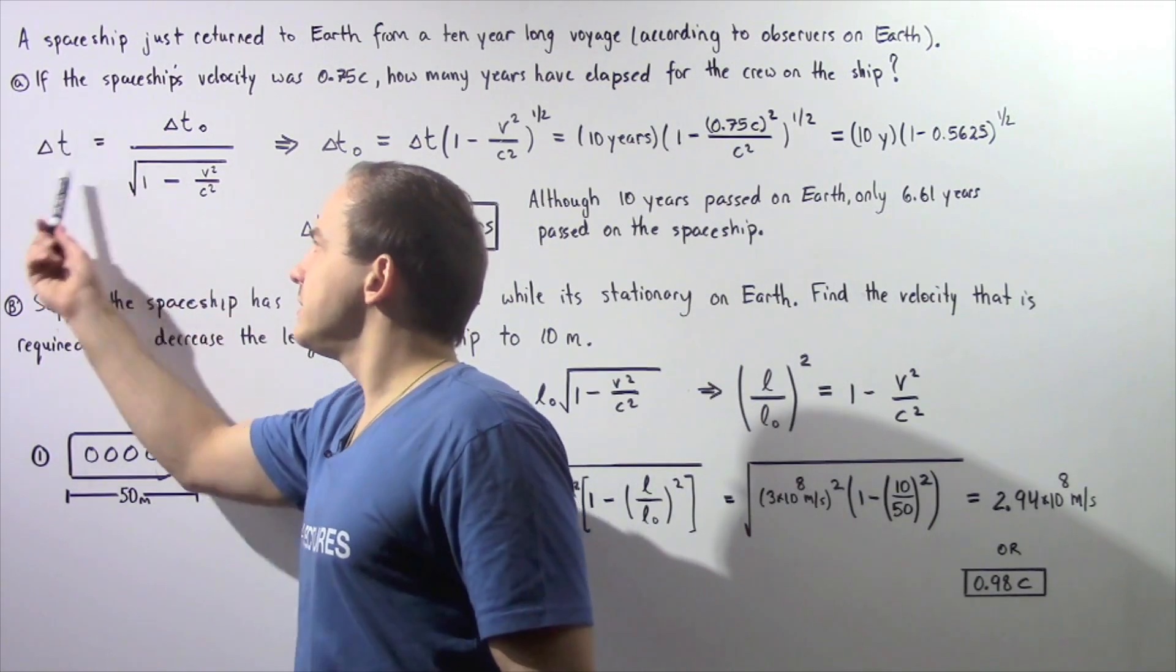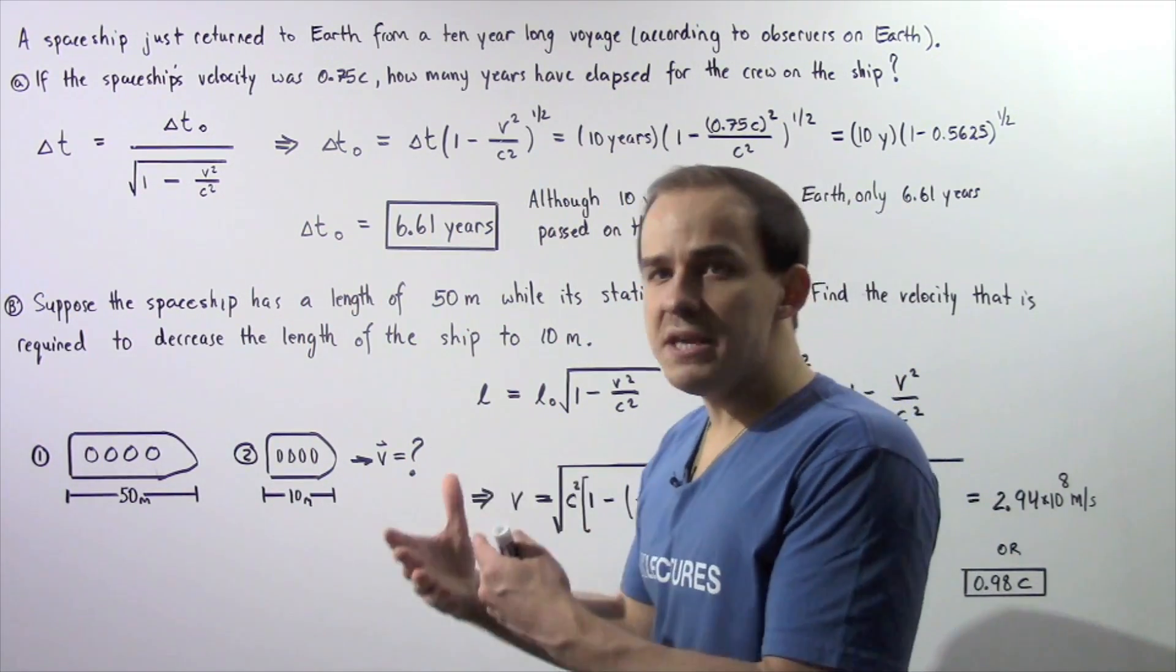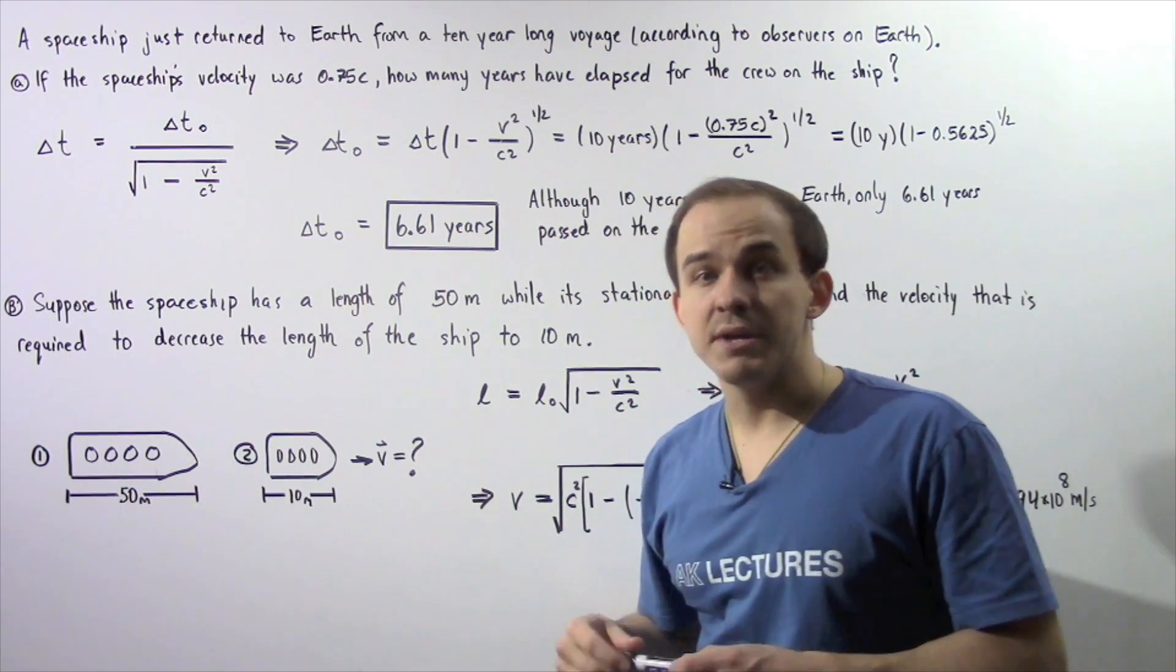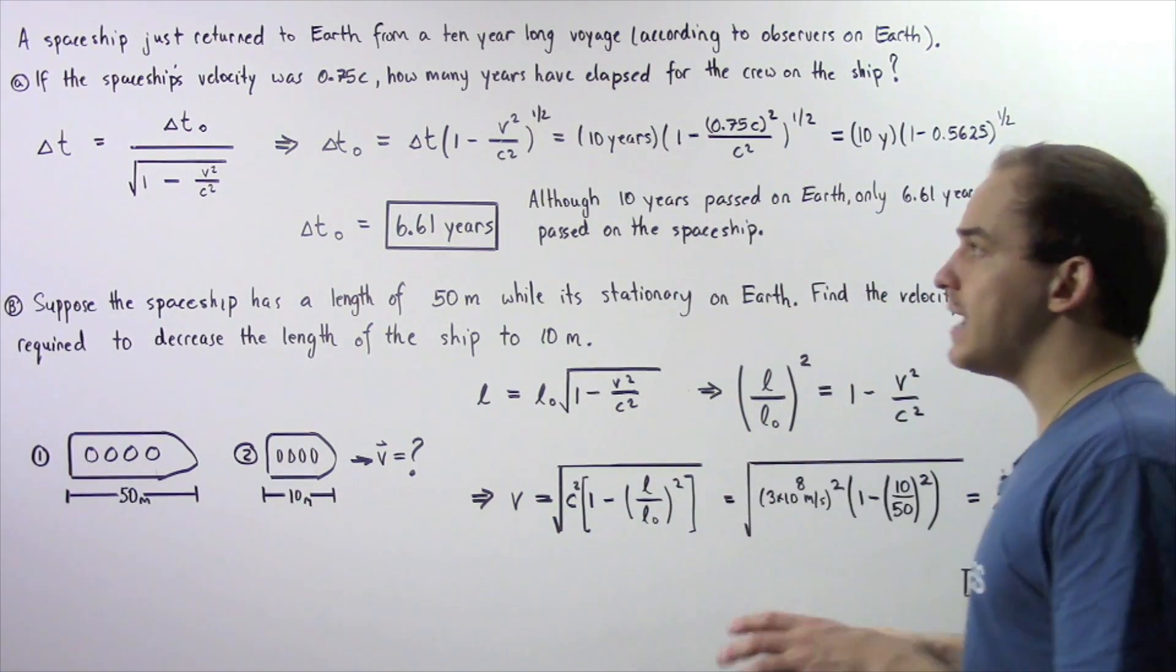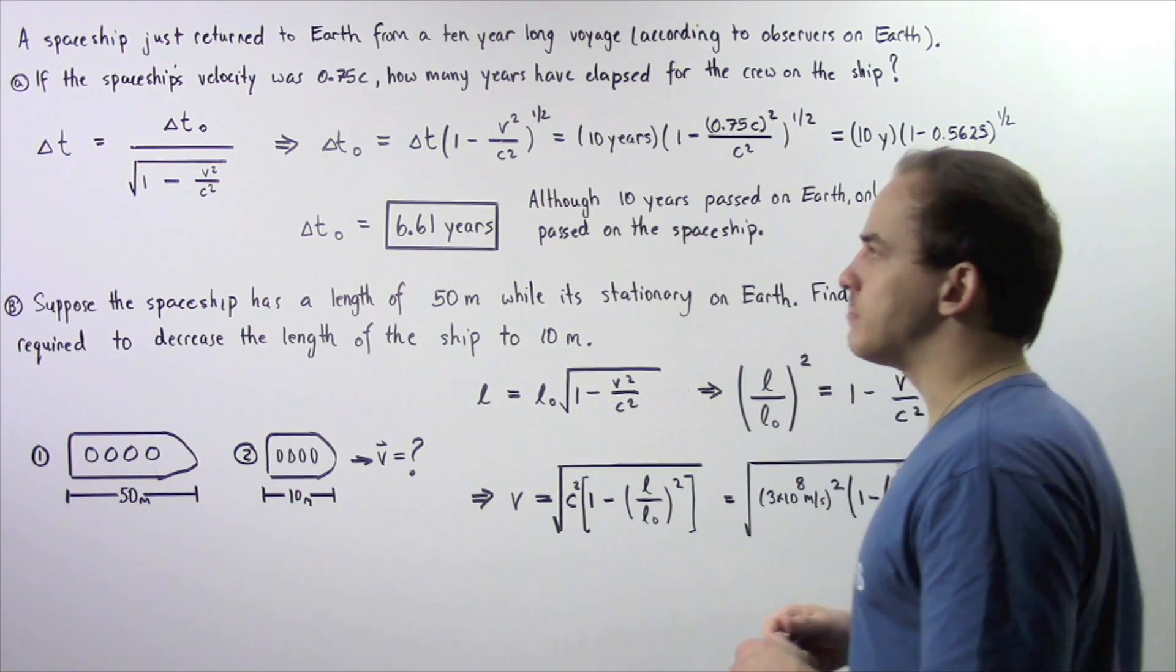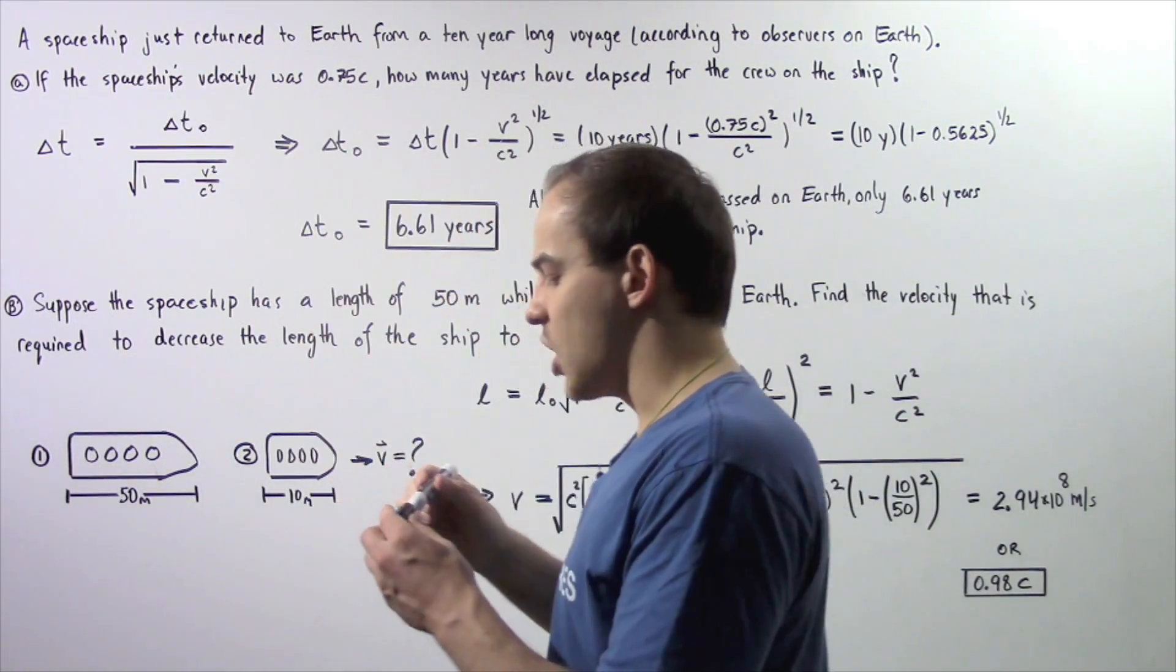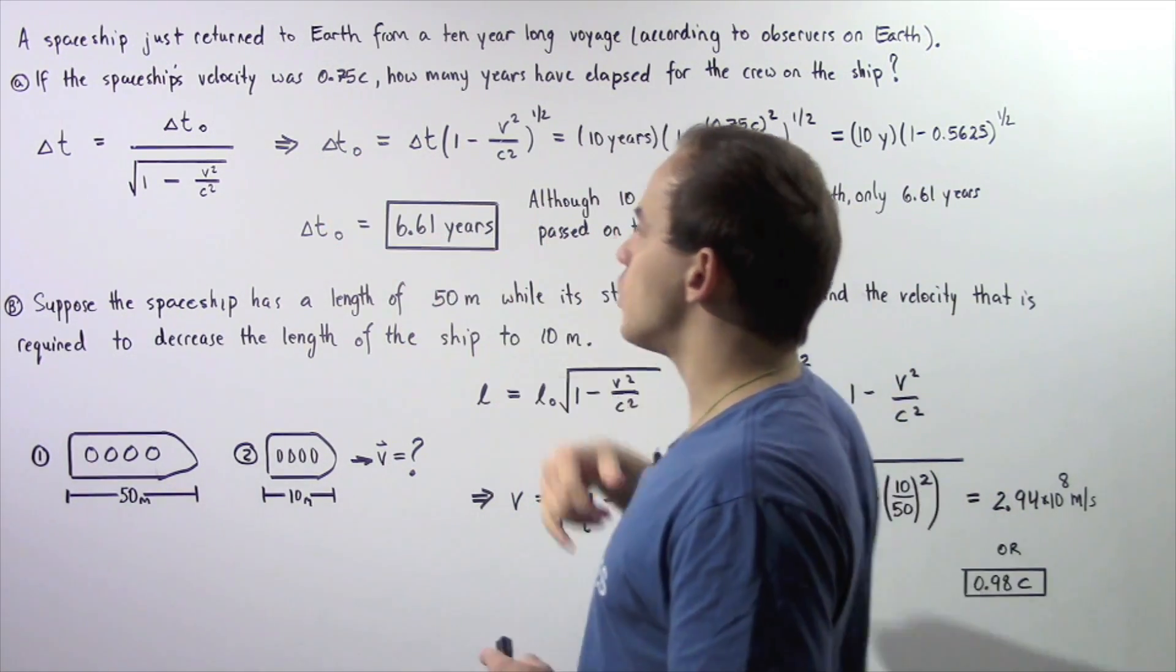Delta T is the time that has elapsed for the people on Earth. Delta T naught is the proper time, the time that has elapsed for the observer on that moving spaceship. And V is the velocity of that spaceship. So we want to solve for this quantity. Let's rearrange and solve for delta T naught, the proper time.